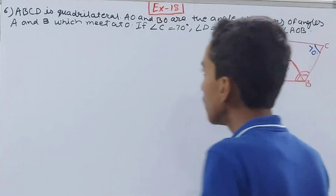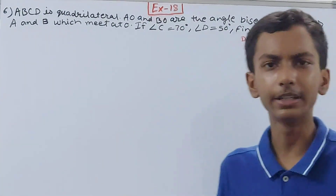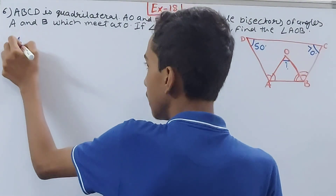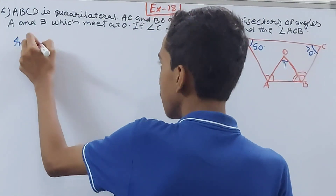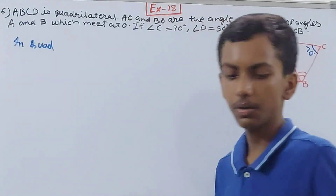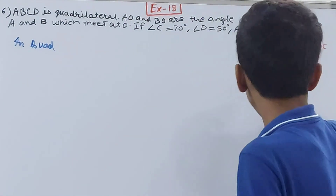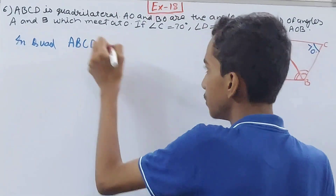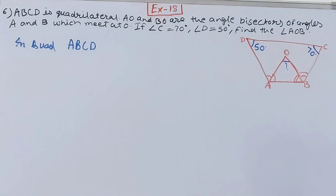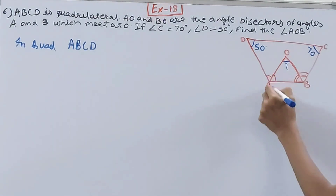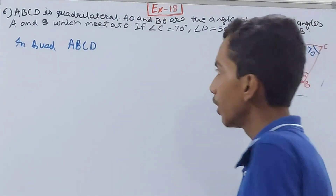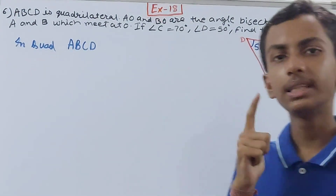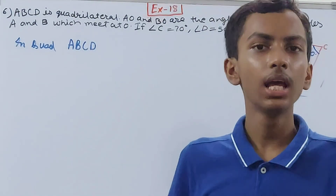Don't worry — you might find this question very difficult at first, but it is actually very easy. In the quadrilateral ABCD, we will use the angle sum property.